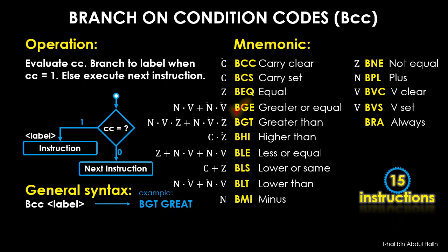Here is an example. The label name chosen is 'great' for the Branch Greater Than instruction. If CLRD zero is the instruction to branch to, the label name 'great' followed by a colon is placed before CLRD zero. Thus when the condition codes for BGT 'great' is logic one, the program will execute the instruction CLRD zero.